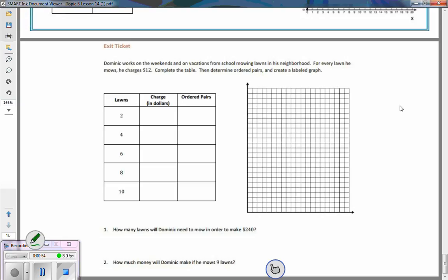When I read that I got the number of lawns is one and he charges $12, so the ratio of the unit rate or the value of the ratio is one to twelve.